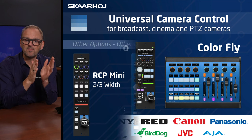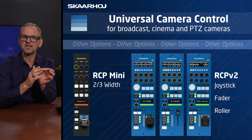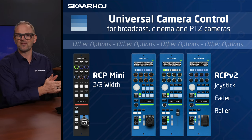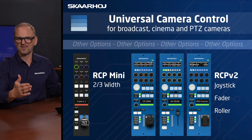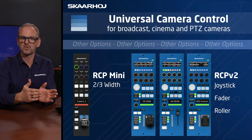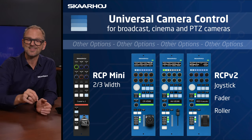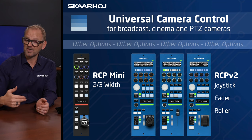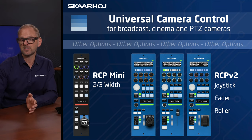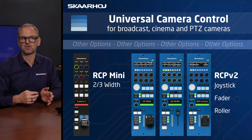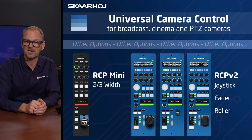The RCP Mini is a slimmer variant of the RCP Pro — simpler and great for some users, but importantly, it fits at two-thirds the width, so where you'd normally fit four RCPs for a camera operator, you can now shade six cameras in the same shading bay. The RCP V2 comes in three variations: one with a joystick, one with a motorized fader, and one with a roller wheel encoder. The fader and roller wheel versions suit multi-camera control, while the joystick version is better for fixed single-camera situations.